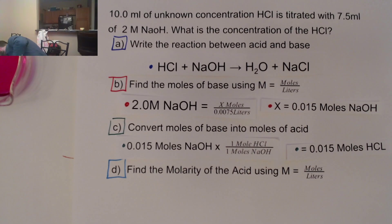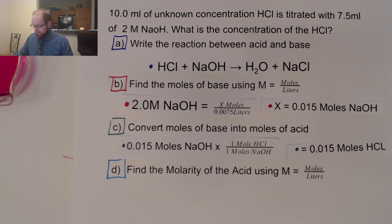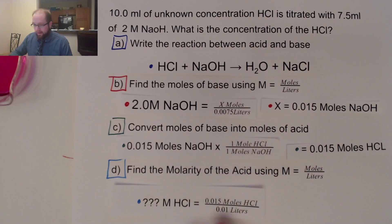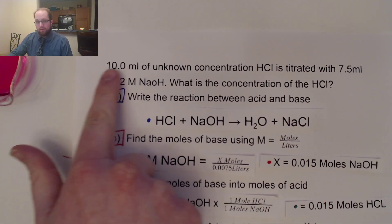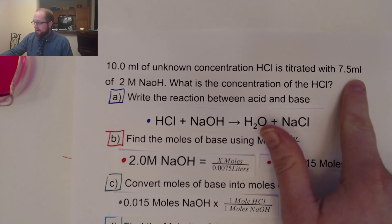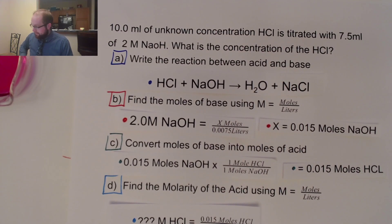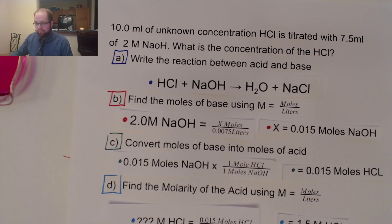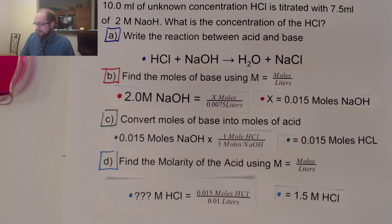In our final step, we need to use the information we found to calculate the molarity of our acid. We do not know the molarity of our acid, but we can divide the moles found in the previous step by the volume of HCl that we used — in this case, 10 milliliters. Be careful: a lot of chemistry students would go back and use the 7.5 again, but that was for the NaOH. If I want to know the HCl concentration, I use the HCl's volume. That gives a final answer of 1.5 molar HCl. I'm able to identify my unknown solution's concentration by just knowing how much NaOH I added.